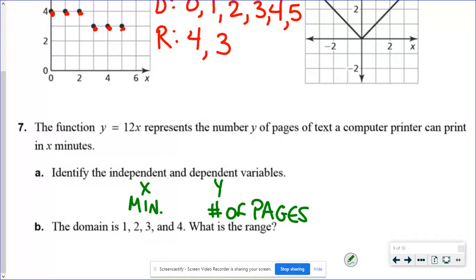If I would substitute in the domain of one, two, three, and four, what's the range? That's just saying if I put in one minute, I would get 12 pages of paper. If I go for two minutes, that would be 24, three would be 36, and four would be 48.